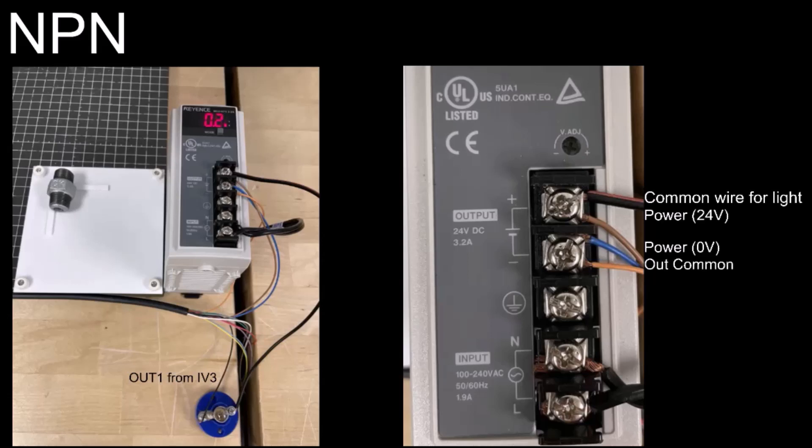On the right image, you can see my output common is now connected to my 0-volt side or 0-volt terminal of my power supply. The common wire for the light is going to my 24-volt to complete the circuit.